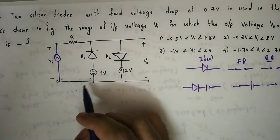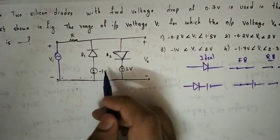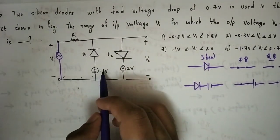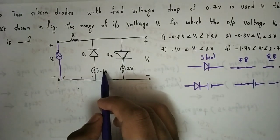Now let's do this. In the redrawn circuit we have a voltage source with plus and minus polarity — a minus 1 volt source. This is the circuit representation we will work with.